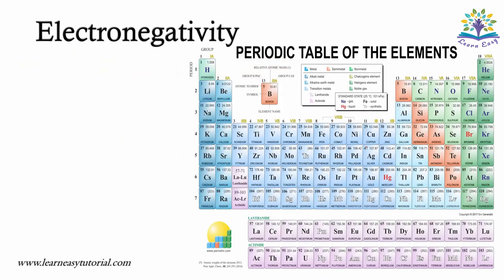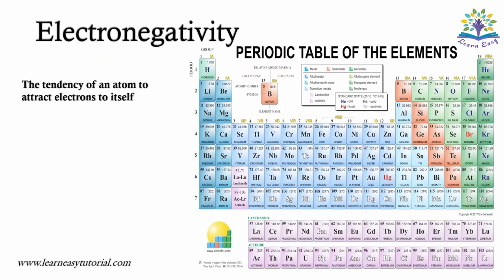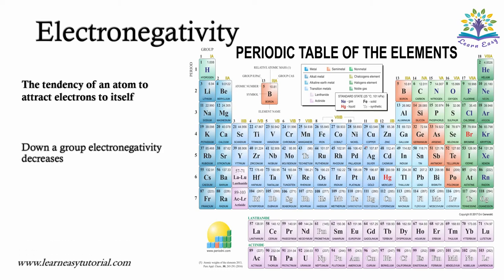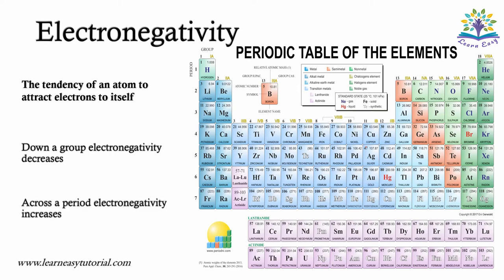To summarize: electronegativity is the tendency of an atom to attract electrons to itself. Down a group, electronegativity decreases, and across a period, electronegativity increases.